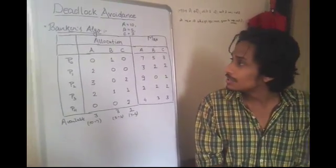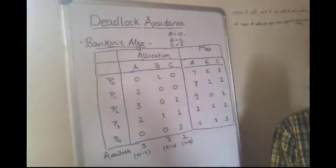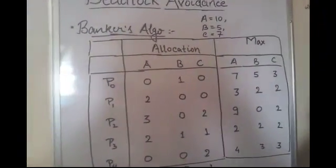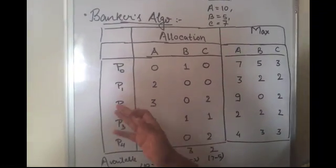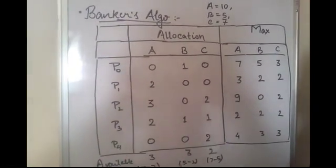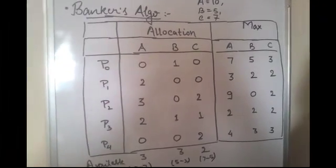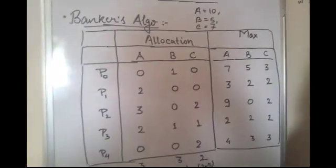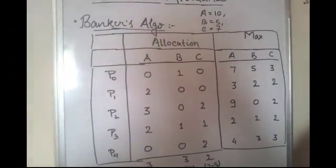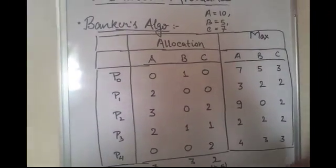To explain it we will use a simple example. Let us consider five processes: P0, P1, P2, P3, and P4. And let us consider just three basic resource types in the computer: A, B, and C. We will consider A, B, and C to have resource instances of 10, 5, and 7 respectively.